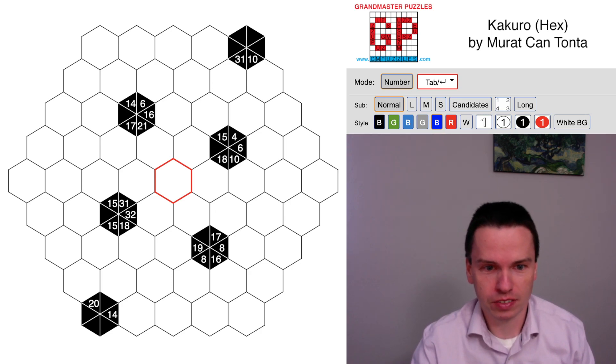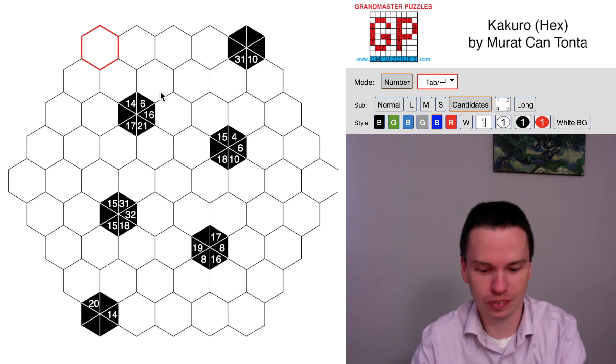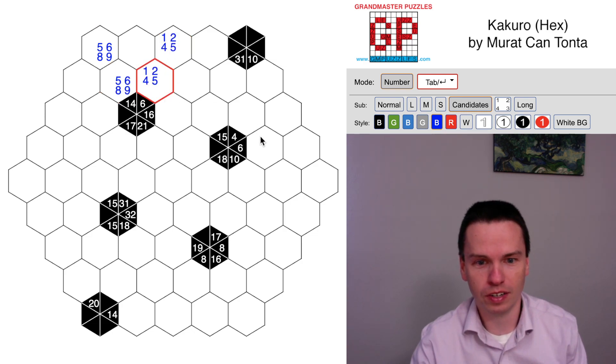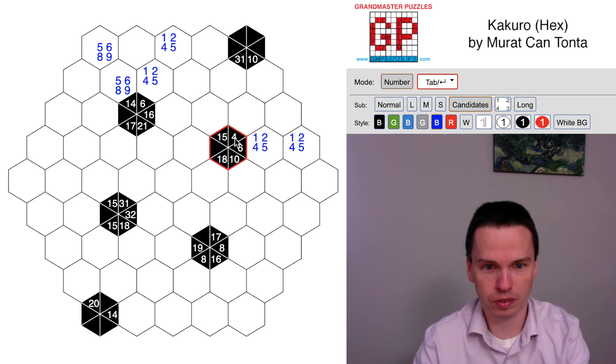We're here to solve this Kakuro hexagonal puzzle by Murat Can Tonta. It's got a lot of cells that have some constraints on them, like this is a 5 with a 9 or a 6 with an 8. This is 1 with a 5 or a 2 with a 4 coming off these sums.